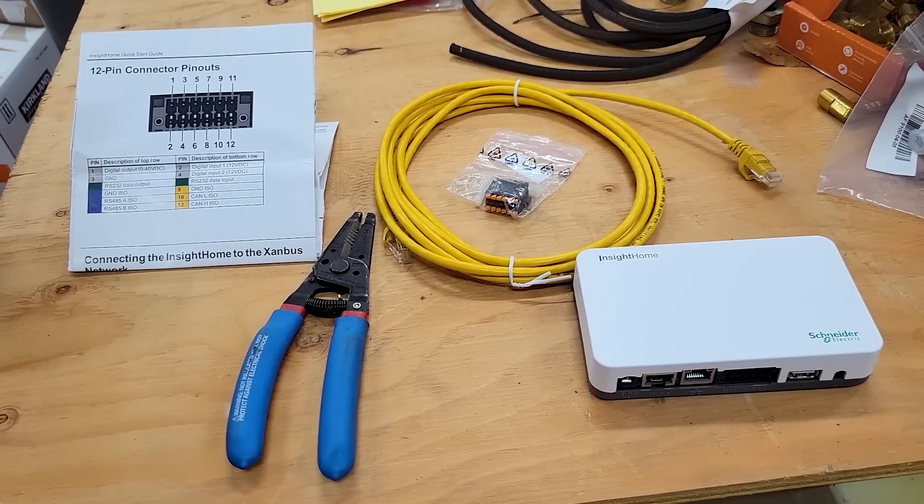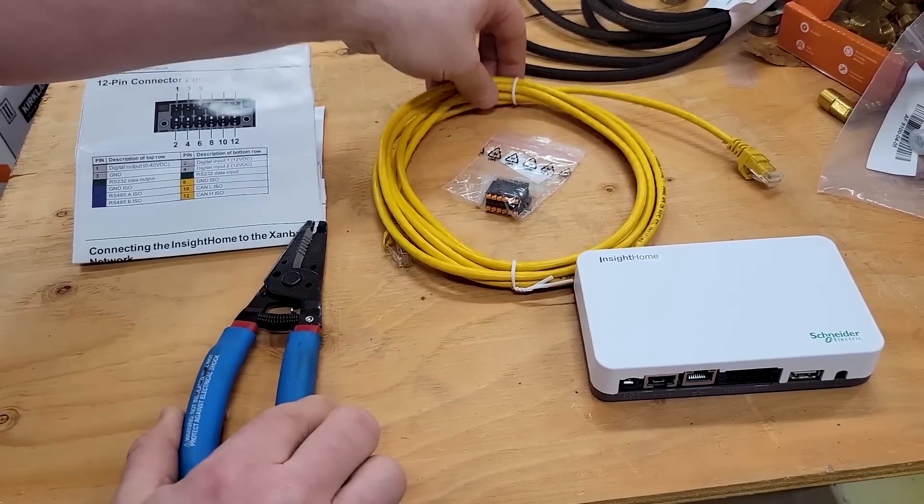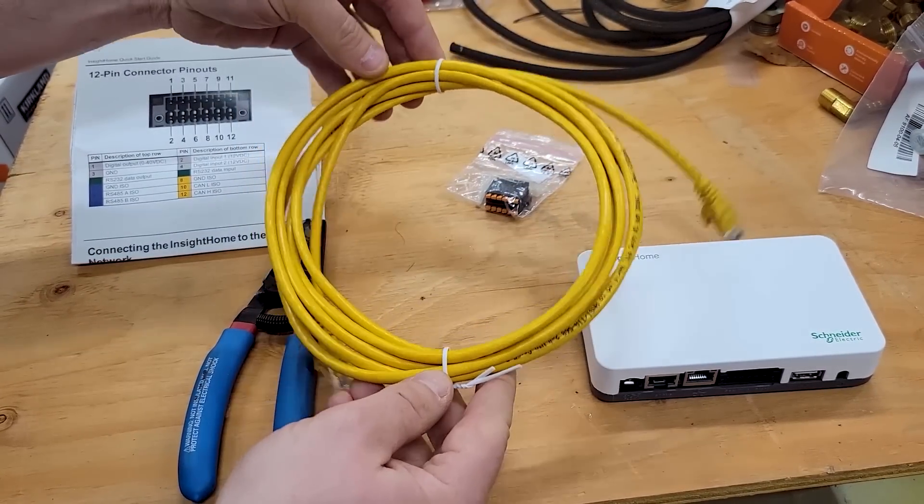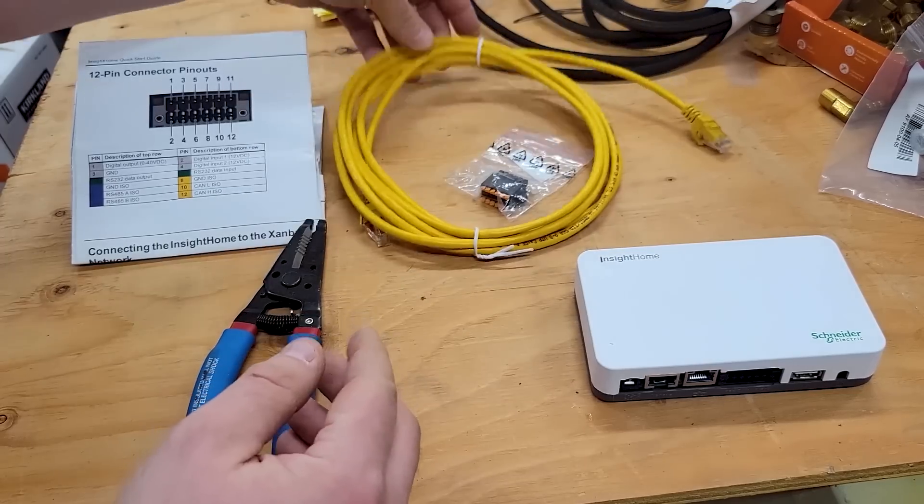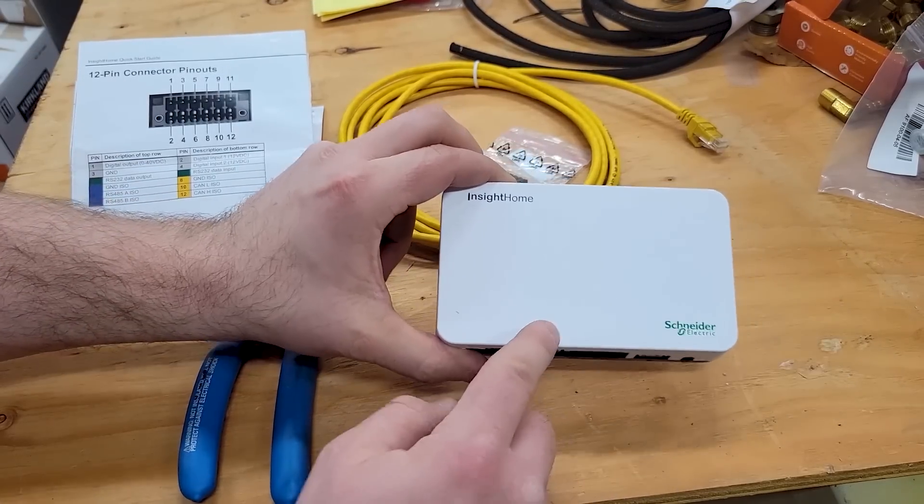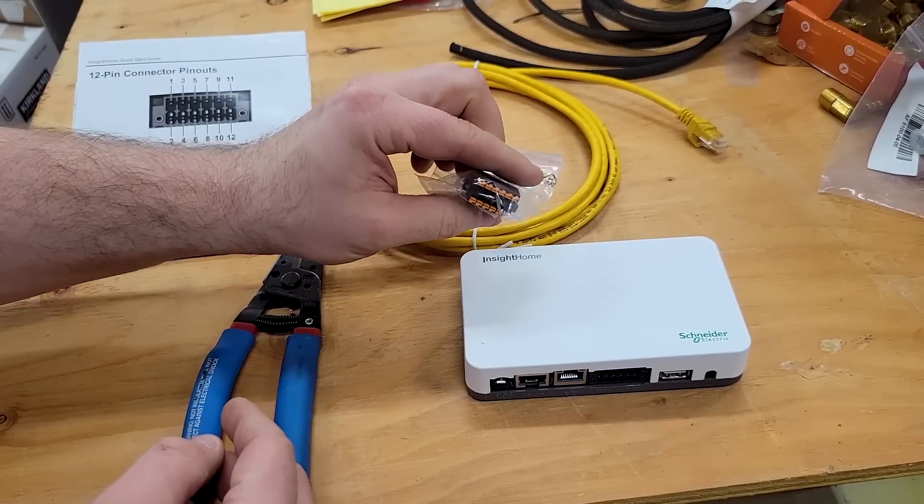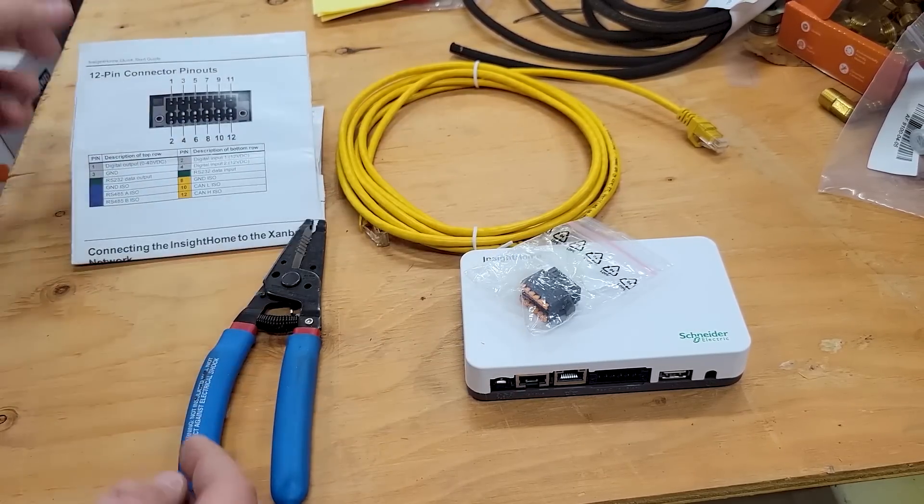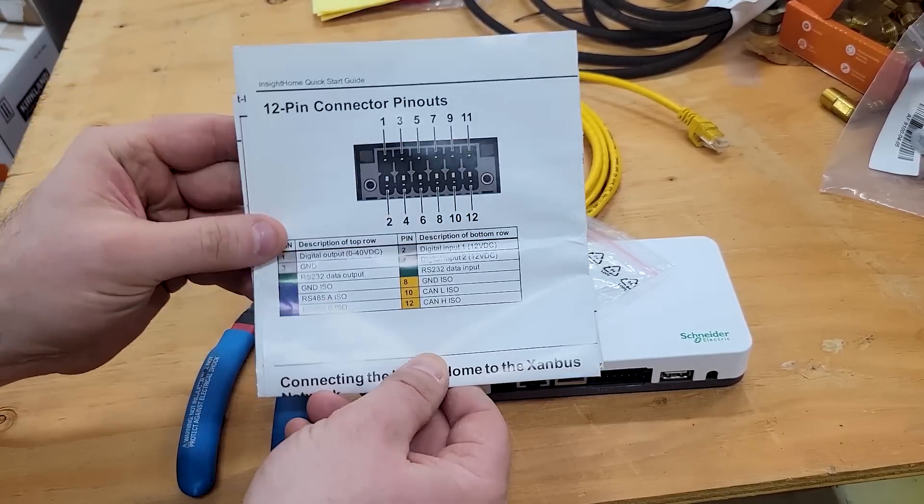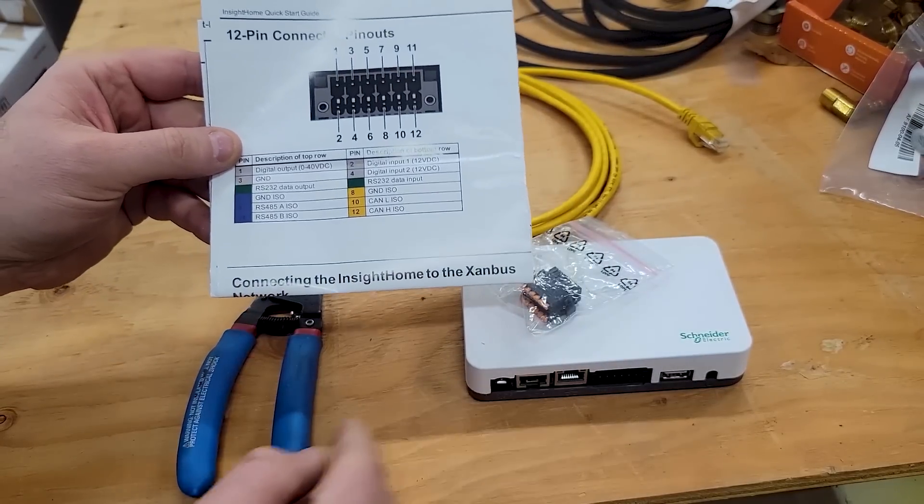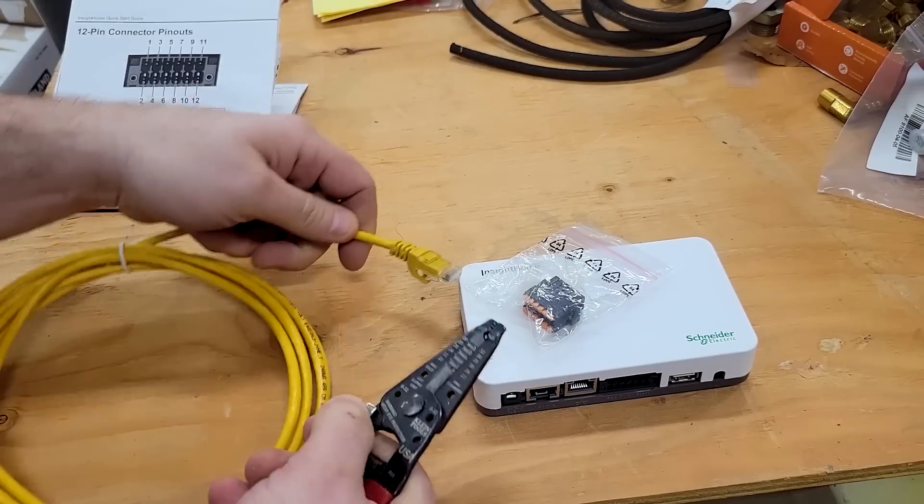Here's what we need to make this happen. We've got some wire strippers and our 10 foot ethernet cable. This is a Cat5e. We also have our Insight Home that I pulled off the wall. The Insight Home came with this little 12 pin connector. And this is our guide, a quick start guide that came with the Insight Home. Let's get started here.